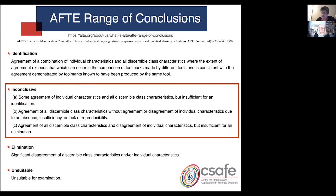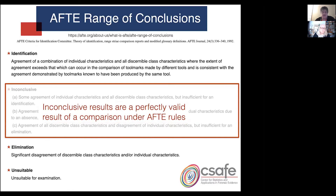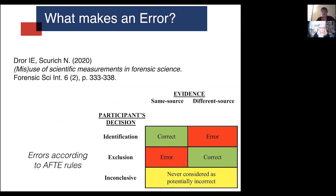Inconclusive results are perfectly fine conclusions under the AFTE theory of identifications, and we will see these in case studies and case work. The question is how we deal with these inconclusive results when trying to establish error rates. Using figure one from a new publication by Draw and Scourge, 'Misuse of Scientific Measurements in Forensic Science,' here is an overview of the table of potential outcomes.